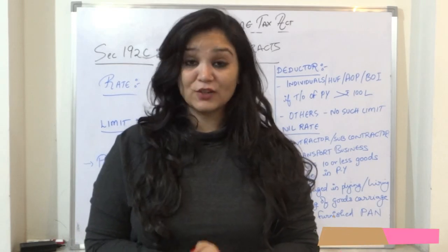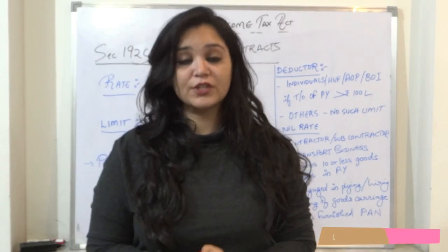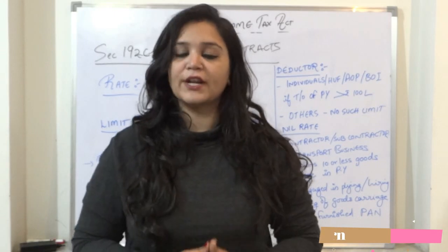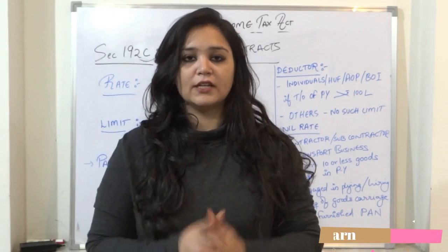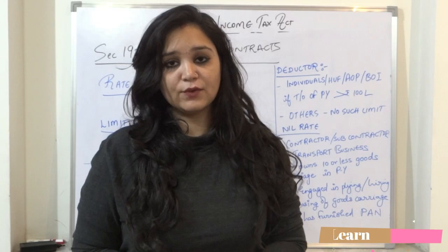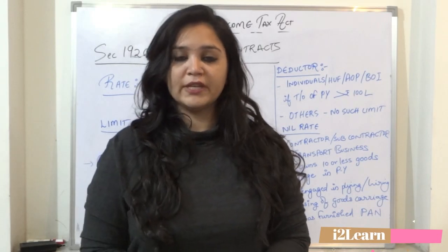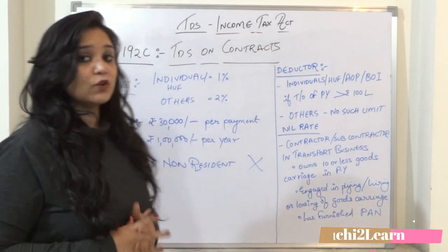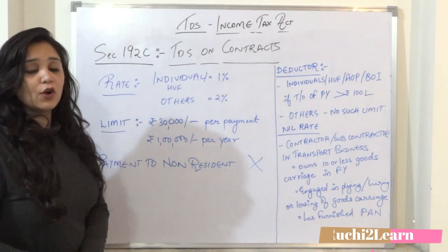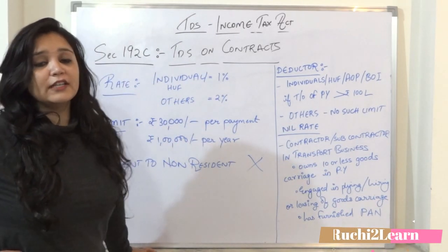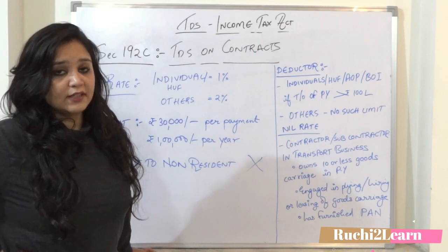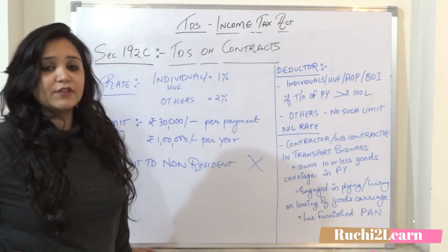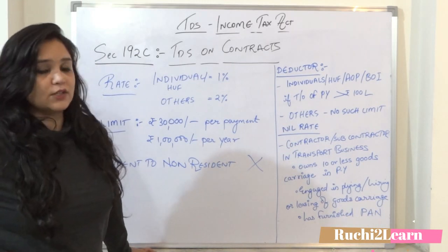Hi guys, welcome back to my channel Ruchi2Learn. Now we are going to study Section 194C. We are studying TDS sections for those who have joined me now. 194C is TDS on contracts — it is paid by contractors who are under a contract and who get income due to the contracts.